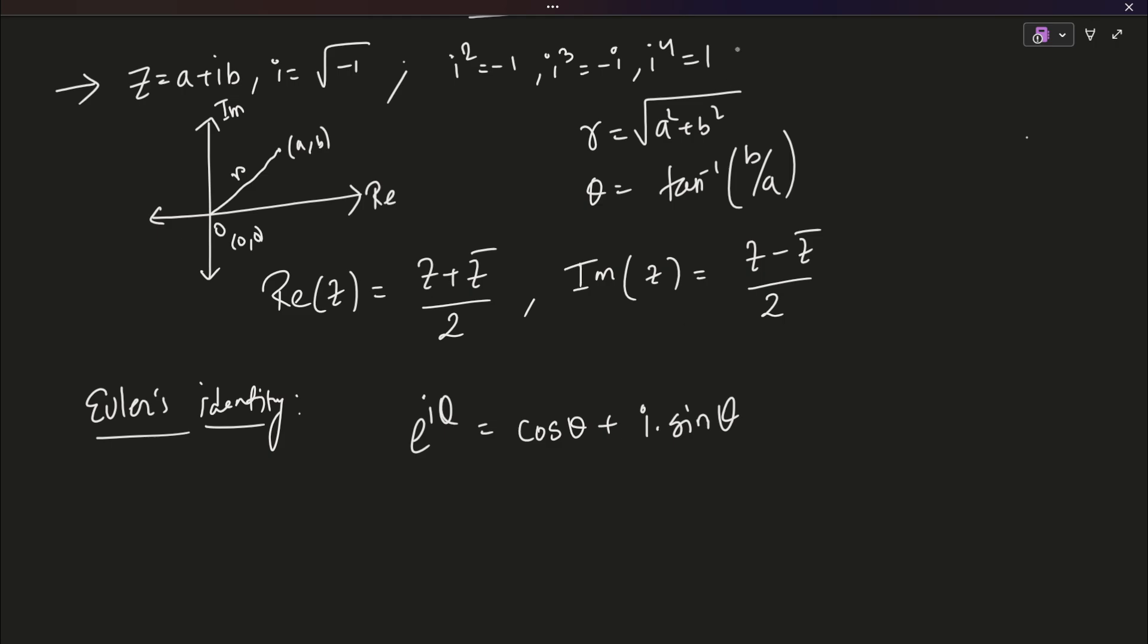Now, why is this useful? If you remember, the polar form of a complex number says that if you have Z equals to A plus IB, you can write this as R whole into cos theta plus i sin theta. And if you can do that, you can simply using Euler's formula, write it as R into e to the power i theta.